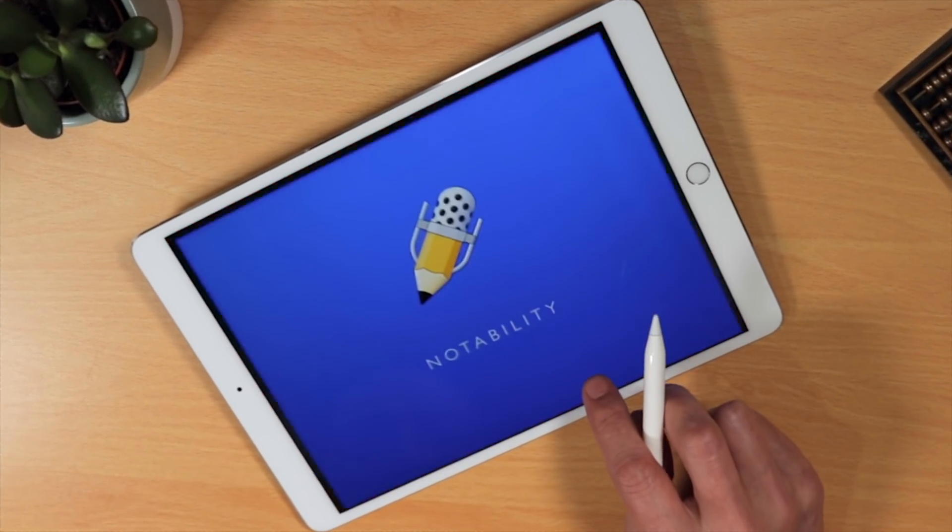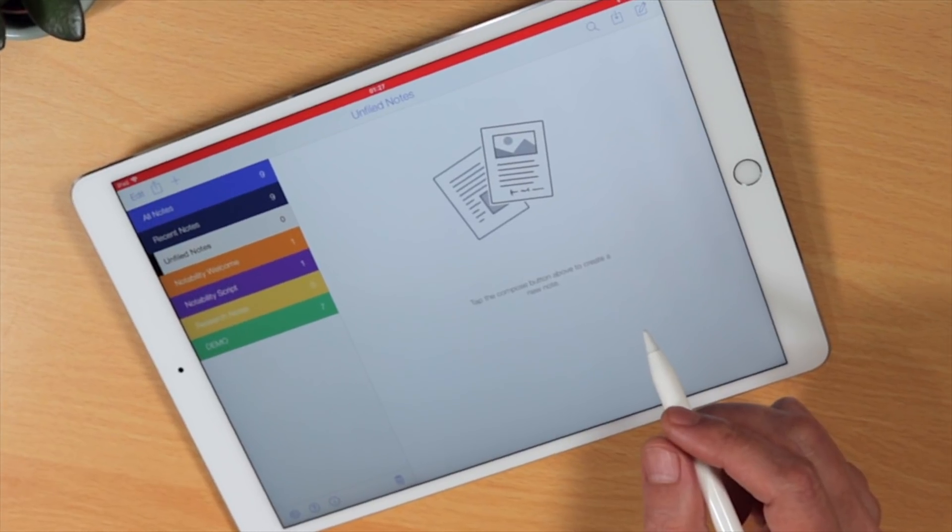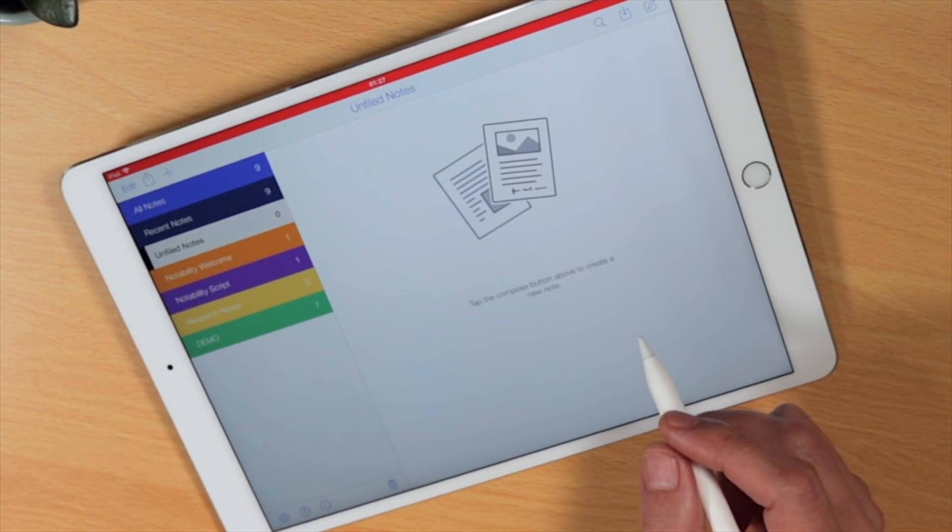Therefore, simply open Notability and let's take a look at some basic settings. Firstly, to change the overall look and default options available in Notability,